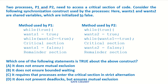Two processes P1 and P2 need to access a critical section of the code. Consider the following synchronization construct where wants1 and wants2 are shared variables initialized to false. We have to determine which of the following statements is true: it does not ensure mutual exclusion; bounded waiting requires processes to enter in strict alternation; it does not prevent deadlock but ensures mutual exclusion.